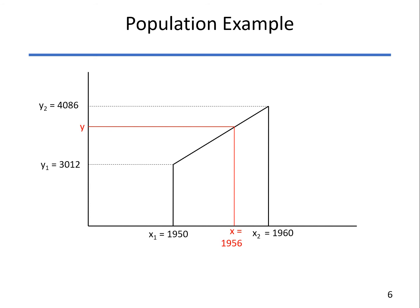Now let's go back to our population example. We'll suppose we want to find the population, or estimate the population, rather, in 1956. We know that the population in 1950 and 1960 are the values that are shown there. There's our formula. So we plug in all the known values, X, X1, X2, Y1, Y2, and solve for Y. That number comes out to be 3656. As you expect, it's somewhere between 3012 and 4086.